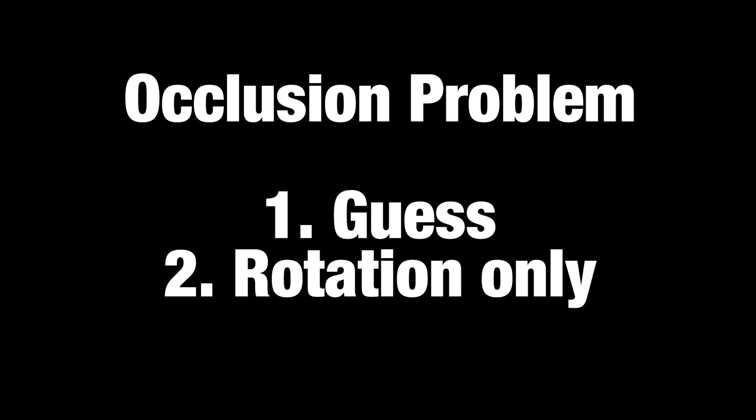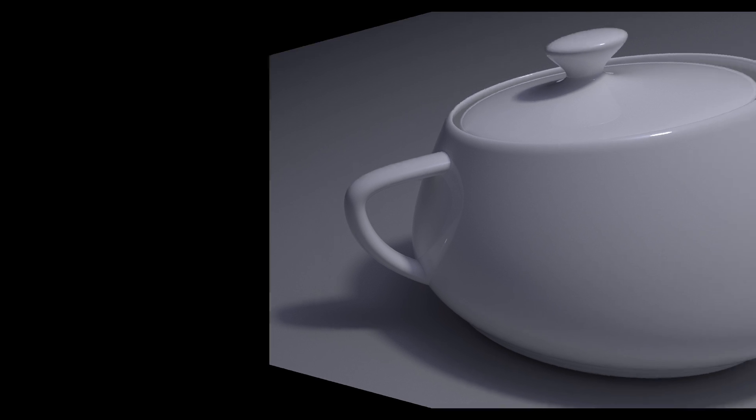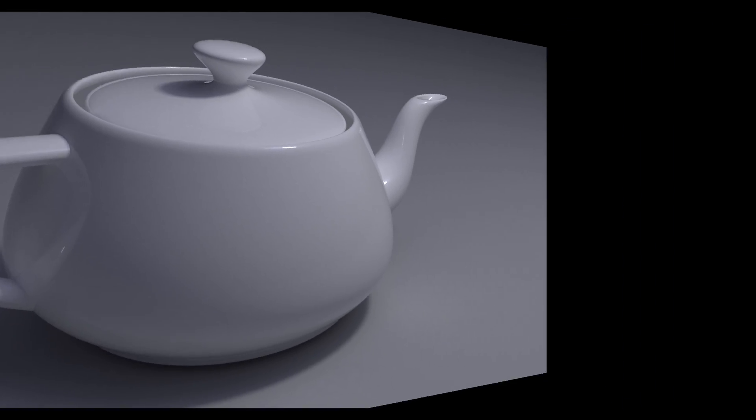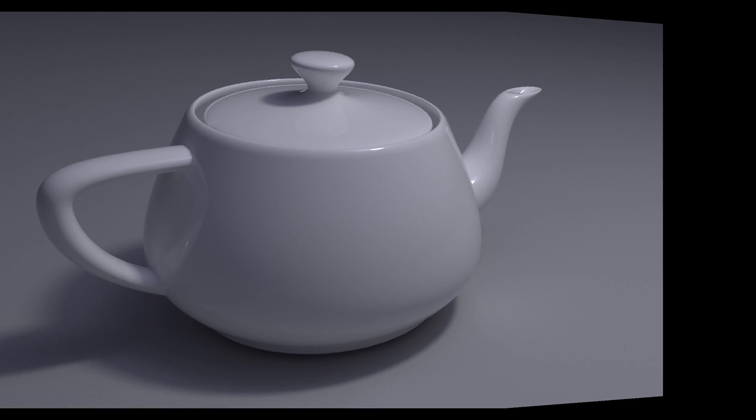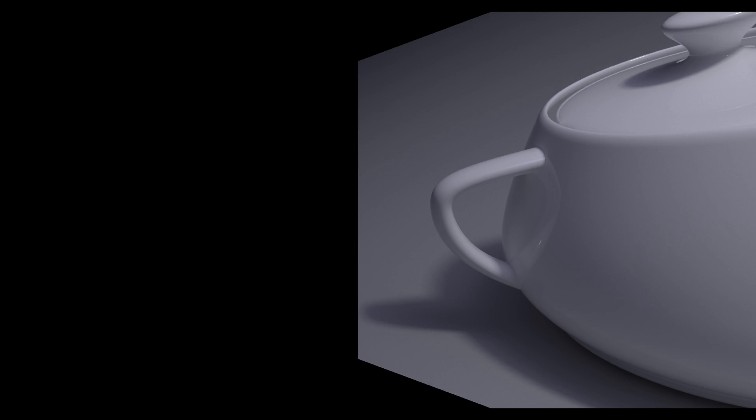A different approach is to constrain how the camera moves in order to eliminate this effect. Basically, as long as the camera is not translating from side to side, up and down, or forward and back — if it's only rotating the viewpoint — there will be no occlusion artifacts, because we can only see from that fixed position the same points in space that we could before. We're just looking at a different angle.